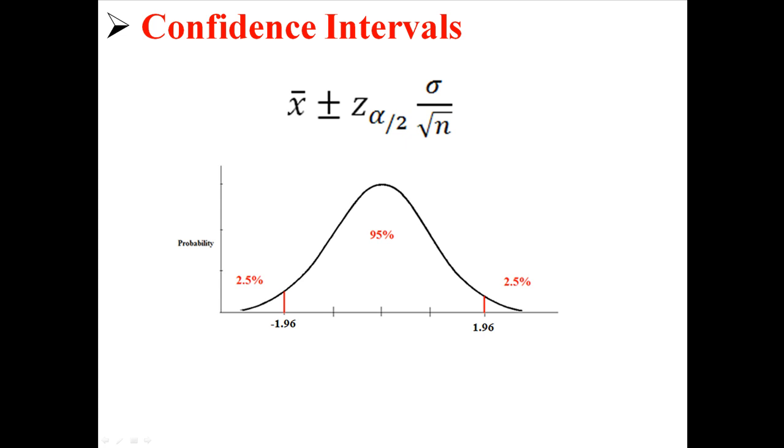You can actually change that. Let's say you want to make a 99% confidence interval or a 90% confidence interval. It depends on what area is going to be, what alpha is going to be. You can change that and look it up in the z-table to find a different value, depending on how confident you want to be.